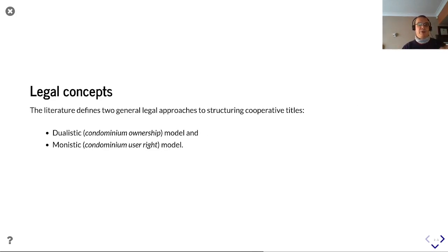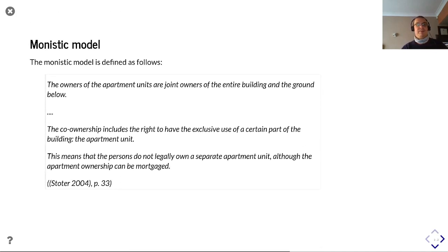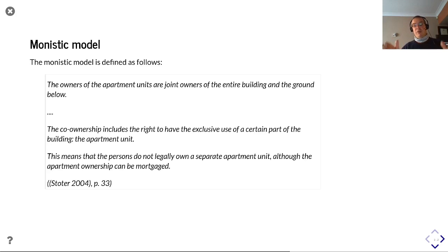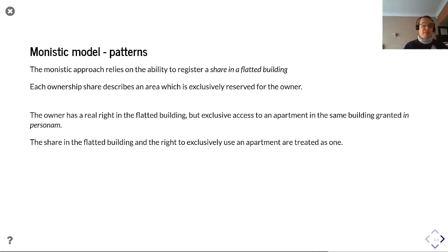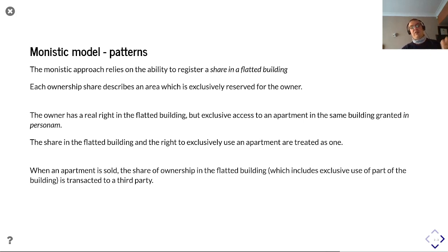The literature defines two general approaches to structuring cooperative titles: dualistic, the condominium ownership model, and monistic, the condominium user right model. The monistic model is defined by Stoter as follows: the owners of apartment units are joint owners of the entire building and the ground below; the co-ownership includes the right to have exclusive use of a certain part of the building — the apartment unit. The persons do not legally own a separate apartment unit, although the apartment ownership can be mortgaged, so your ownership of your apartment is not one step removed and potentially held as an off-register right. The monistic approach relies on the ability to register a share in a flatted building, and each ownership share describes an area exclusively reserved to the owner.